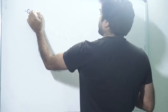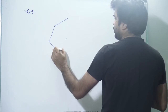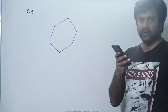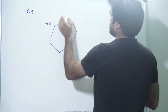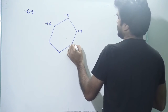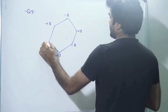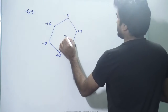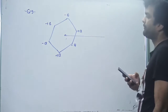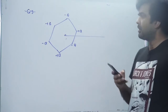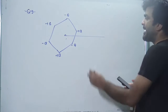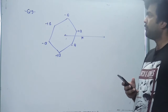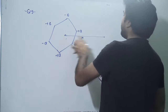In question number 9, there are six charges kept on the corners of a regular hexagon. The charges are alternately positive and negative: +Q, -Q, +Q, -Q, +Q, and -Q. From the center of the hexagon, a line is drawn perpendicular to the plane of the hexagon, and we have to find the magnitude of the electric field at a distance x from the center.